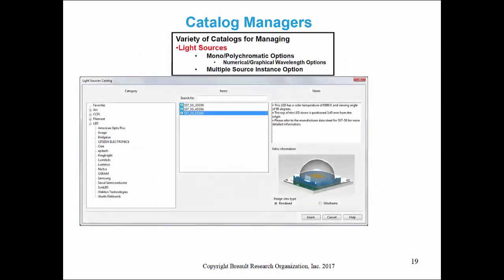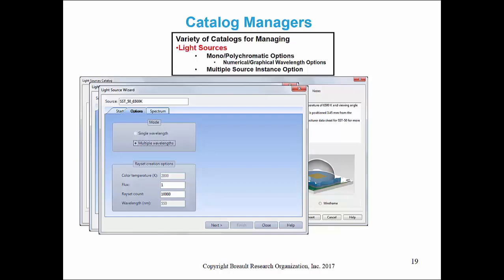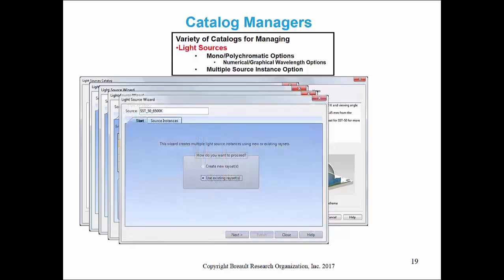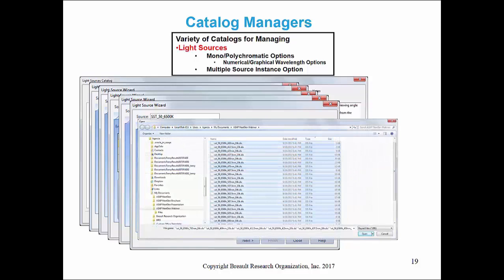An important Catalog Manager is the Light Source Catalog, which contains a large number of manufacturer sources with sophisticated geometry models and accurate emission properties. You can search for light sources in the catalog, then create rays for existing ray sets — for mono or polychromatic sources. Choose your source wavelengths, generate those rays, use existing rays to assign ray files to geometry, and then complete the source creation.